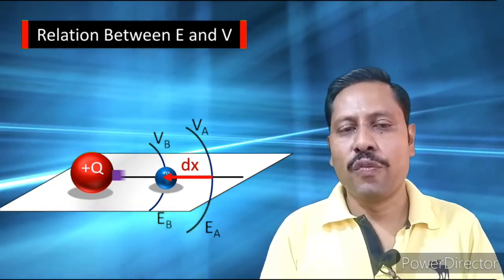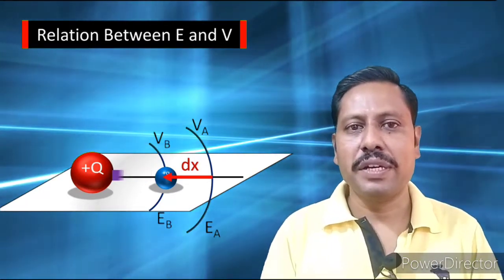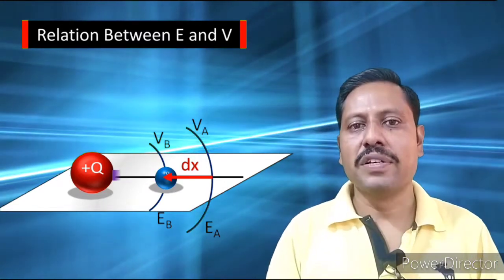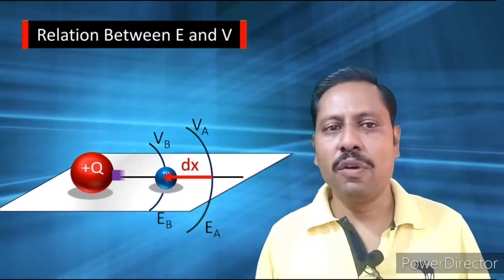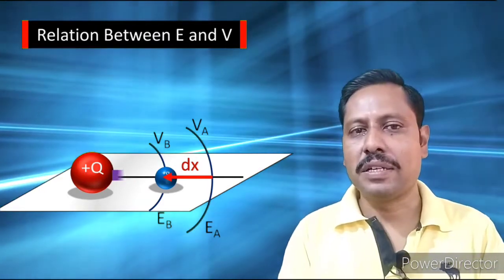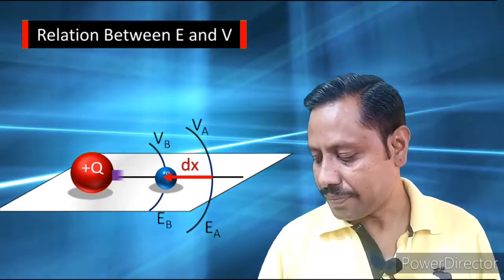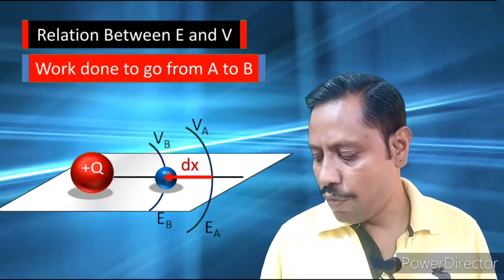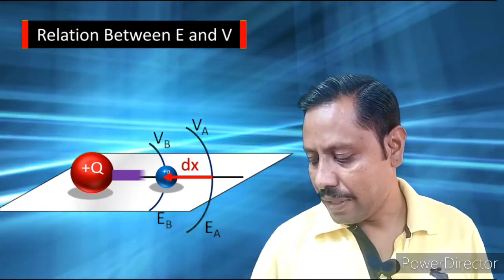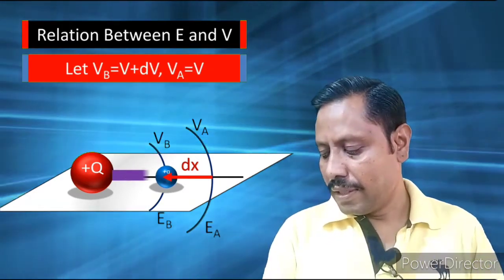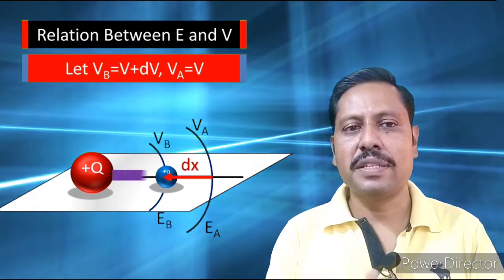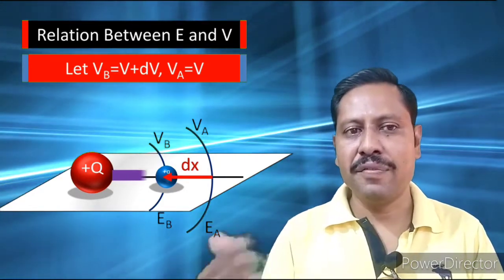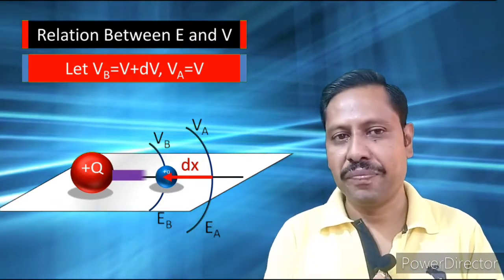So this work we have to find out, and this work will be found in two different ways. First, we will find it by using the concept of electric potential, and then by using the concept of electric field. So work done to go from A to B, we have to find out. Let us say the values of VB is V plus DV and VA is V.